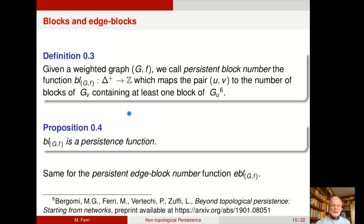Let me give an example. First, let me recall what a block in a graph is. It is a subgraph of the given graph which contains no cut vertex and which is maximal with respect to this property. Please note that a subset of a block is generally not a block. So it can't be a potential simplex in a simplicial complex. But we can still define the persistent block number function as this function which maps the pair u v to the number of blocks of the subgraph g sub v containing at least one block of the subgraph g sub u.